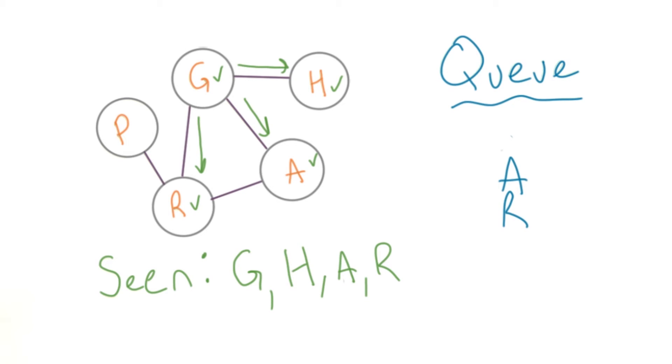It's important to note that when we dequeue, we're getting a node adjacent to the one that we started with.